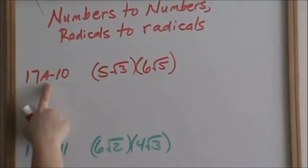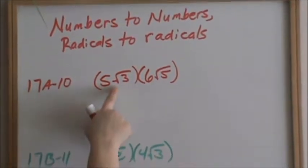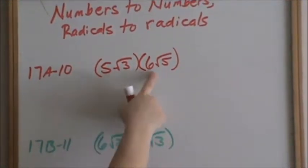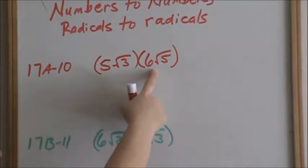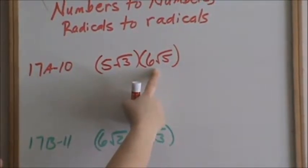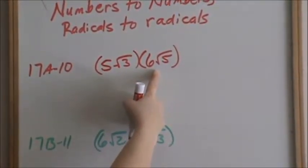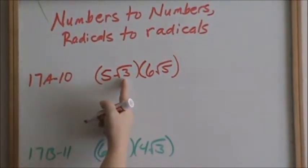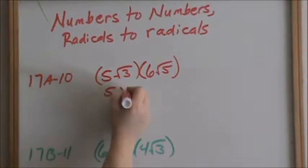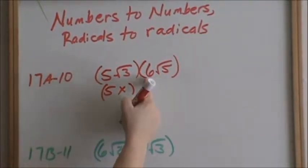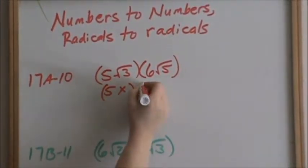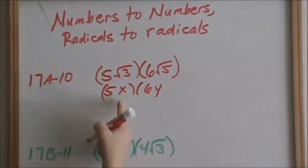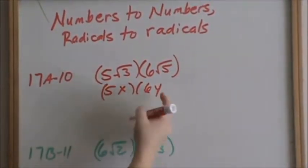So we're going to do 17a and number 10 first. This is 5 square root of 3 times 6 square root of 5. I'm going to show you in algebra how this is similar to radicals. Let's pretend like 5 square root of 3 was like 5x, and 6 square root of 5 is like 6y. Our radicals are different, so I have different variables.